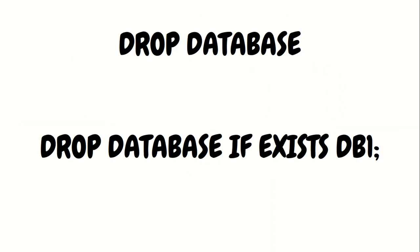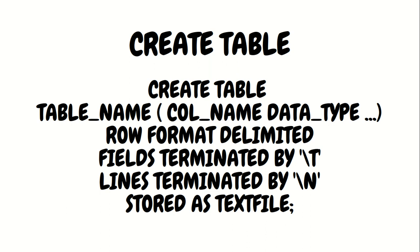Then drop database. How can we drop a database? The command is: drop database <database_name>, or drop database if exists <database_name>. How to create a table? Create table <table_name>, then specify column names and data types. We have the keyword row format delimited, and to separate columns we use fields terminated by, to separate lines we use lines terminated by newline, stored as text files. This is the complete syntax for creating a table in Hive.